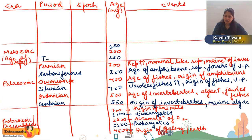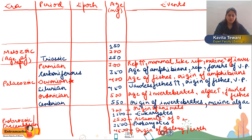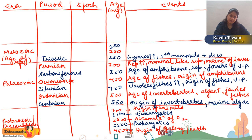In the Triassic period: gymnosperms became dominant (they originated in the Permian period), and first mammals plus dinosaurs appeared. In the Jurassic period — you must have seen the movie Jurassic Park — gymnosperms kept dominating, dinosaurs became dominant, and first birds appeared.